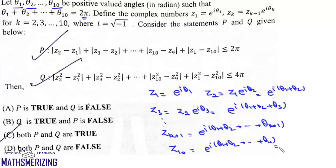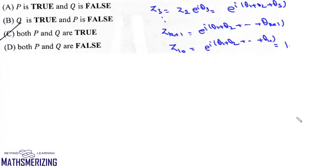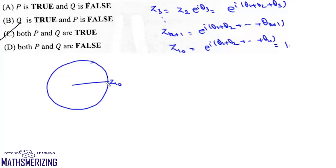We are given that θ1+θ2+...+θ10 = 2π, so z10 = e^(2πi) and cos(2π) = 1. Basically, all 10 points lie on the unit circle. This is z10, and then we have z1, z2, z3, ..., z_k, z9, with angles θ1, θ2, θ3, ..., θ10 between them.